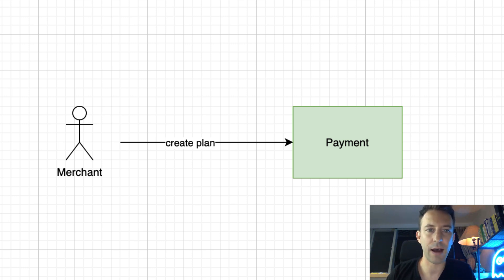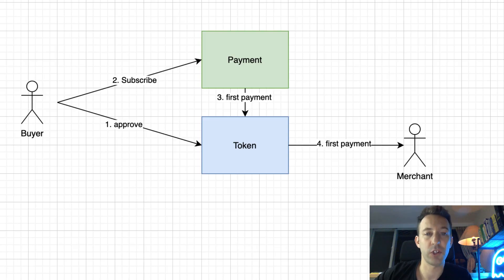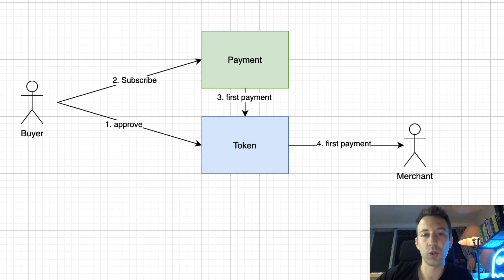Let's see how the subscription system will work. We start with our merchant — the person who will accept the recurring payment. At the center of our system is a payment smart contract. The merchant will create a new subscription plan by calling a function on this payment contract, specifying the frequency and amount of payment. Later, a buyer will subscribe to this plan. We assume payment will be done with an ERC20 token, so the buyer needs to call the approve function on the token's smart contract so the payment contract can spend tokens on behalf of the buyer.